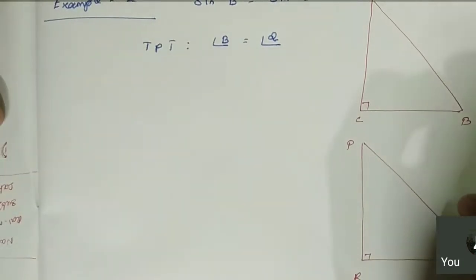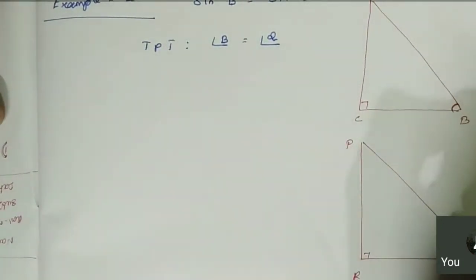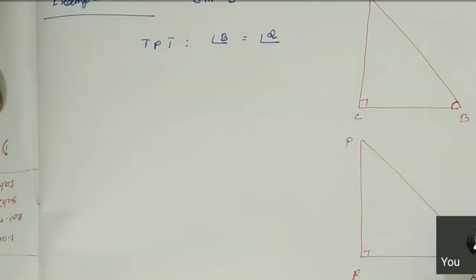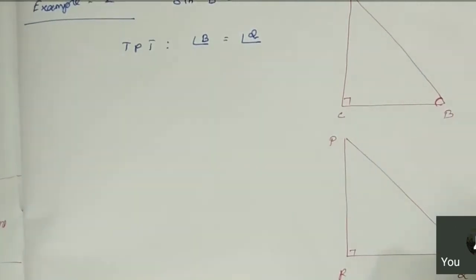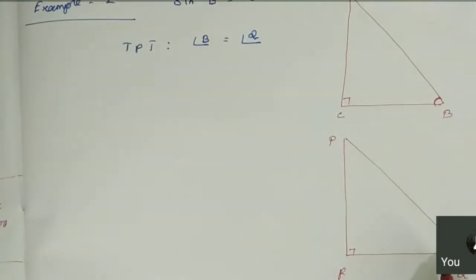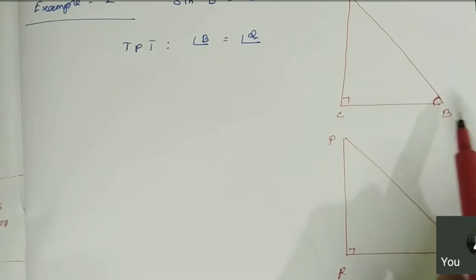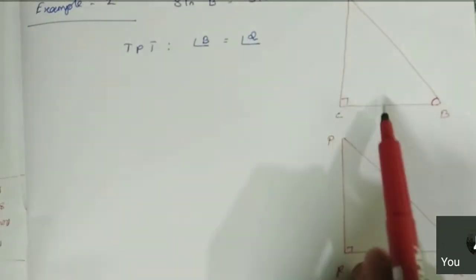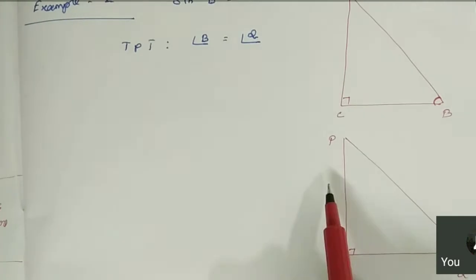What are we given here? We need to prove angle B is equal to angle Q. We are given that sine of B equals sine of Q. The sine ratio of angle B is opposite by hypotenuse — that is AC/AB — and the sine ratio of angle Q is opposite by hypotenuse — that is PR/PQ.